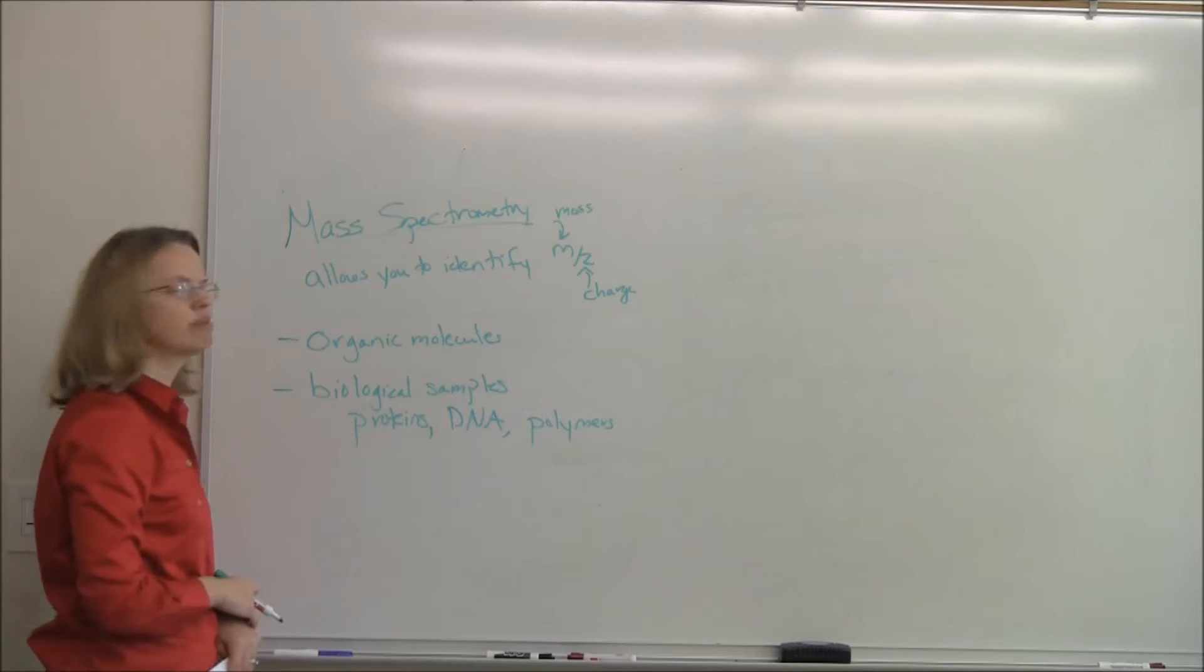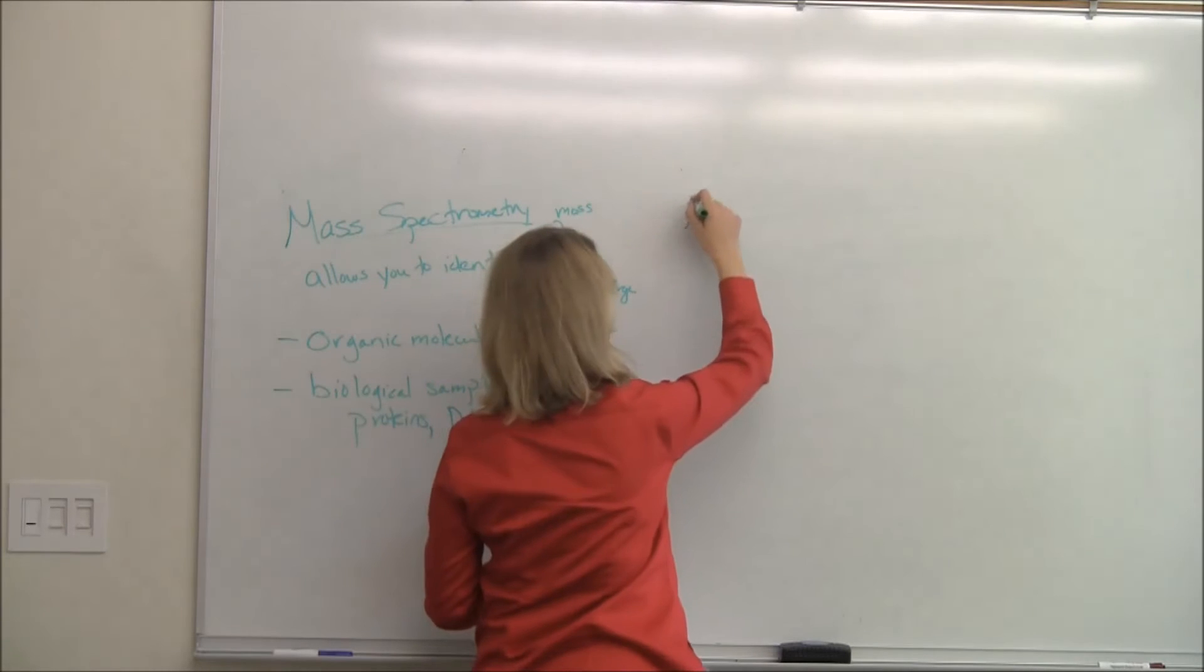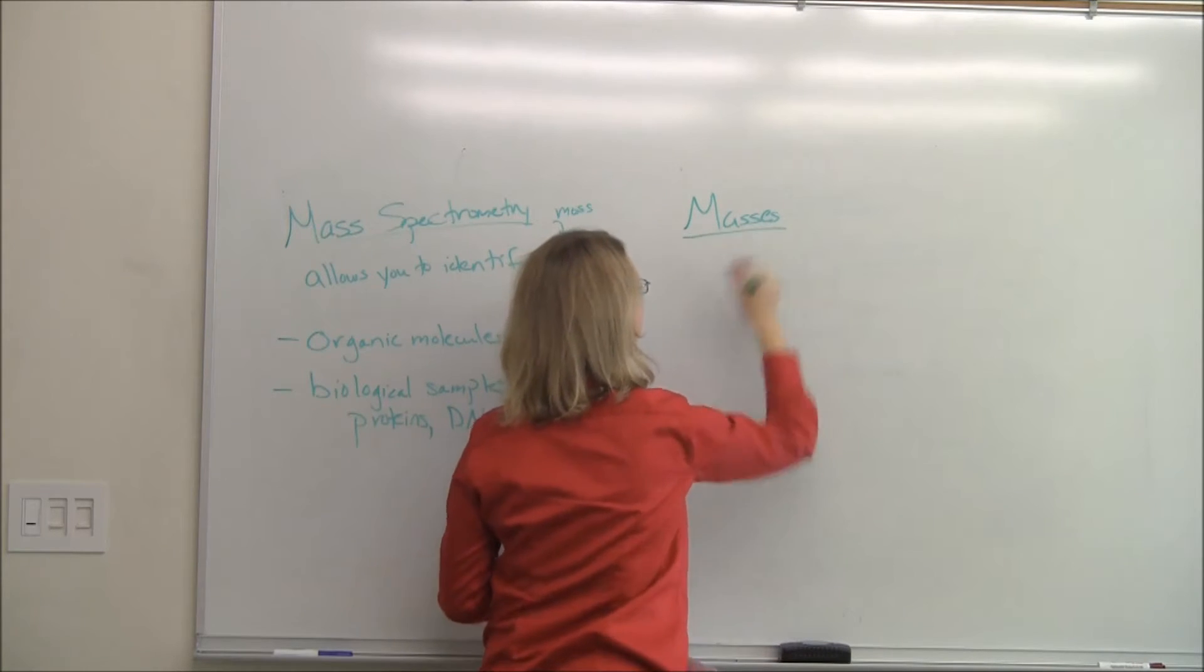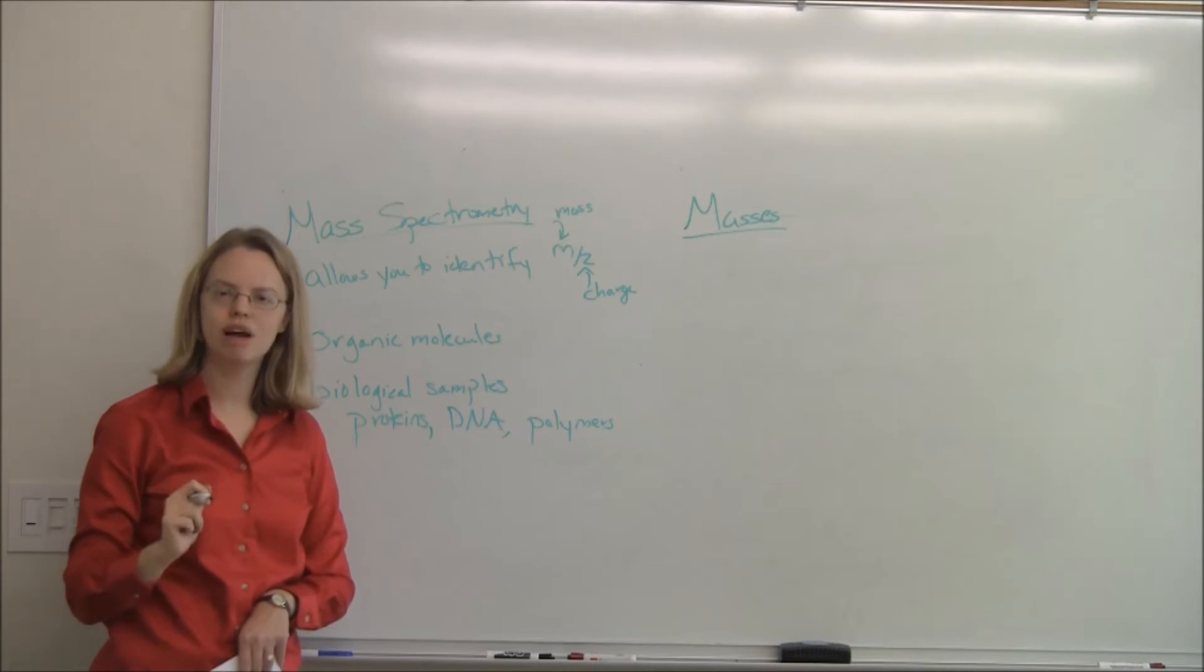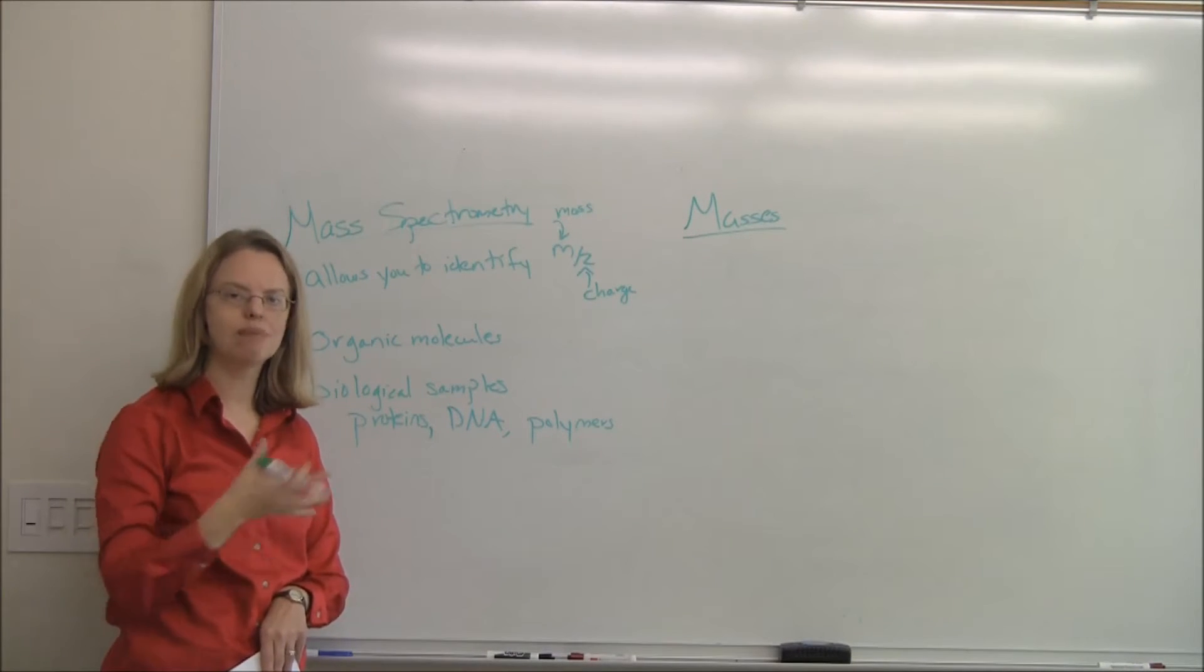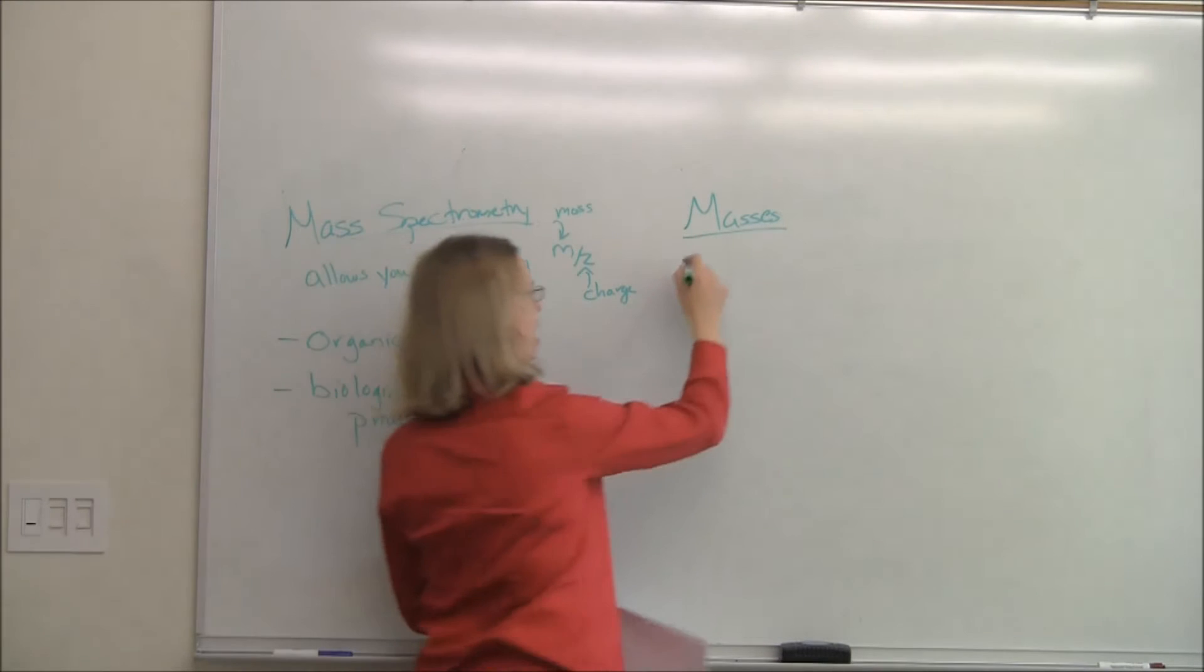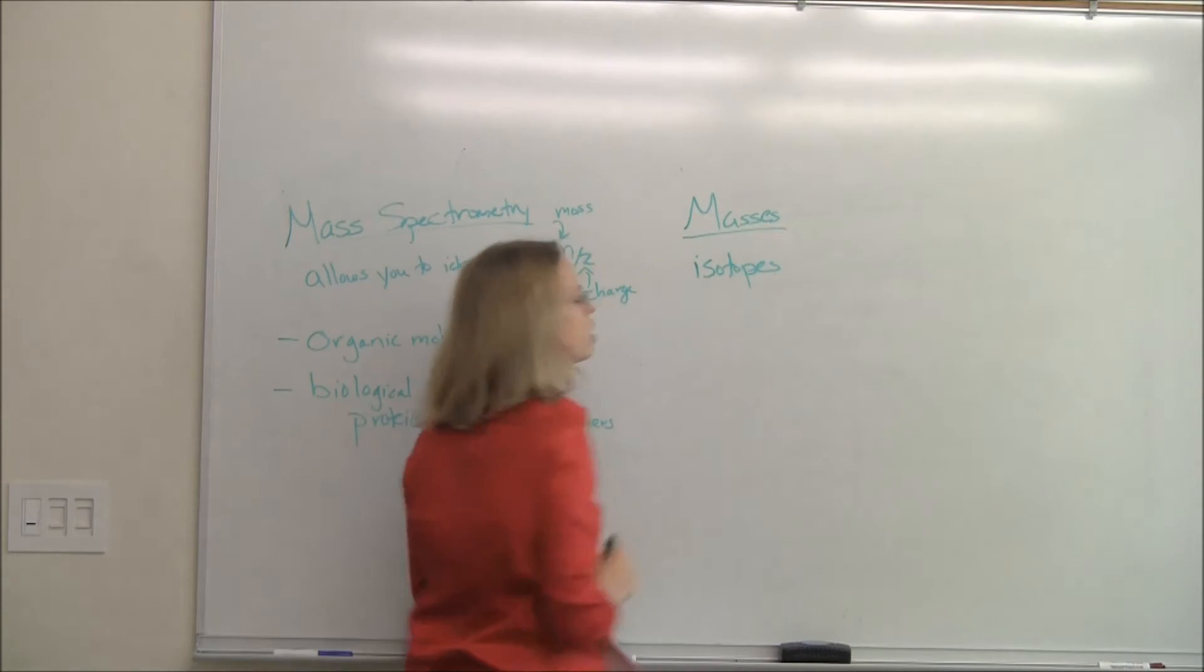Before we get into mass spectrometry and the instrumentation, we've got to talk a little bit about mass spec in general. We need to talk about the concept of masses in mass spec. And you say, oh, I know how to find a mass, right? You find it from the periodic table. You look at the periodic table, it's going to tell you what the mass of your ion is. Well, for mass spectrometry, you frankly never want to use the periodic table. And because mass spectrometry distinguishes between isotopes.